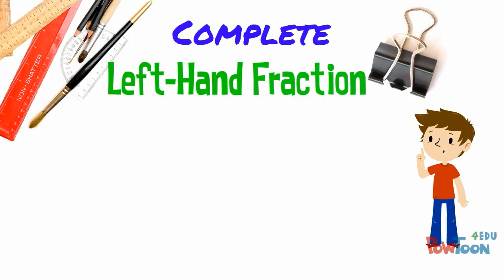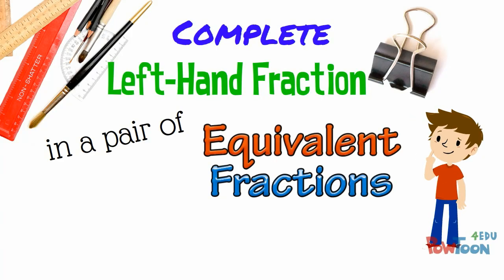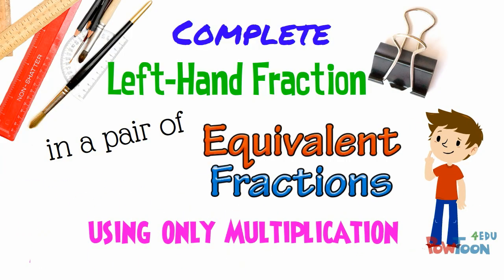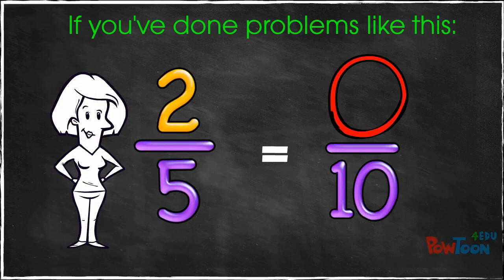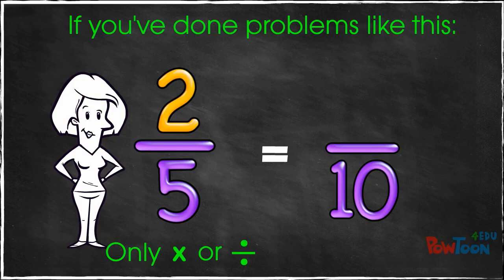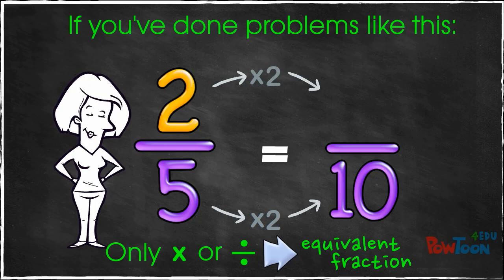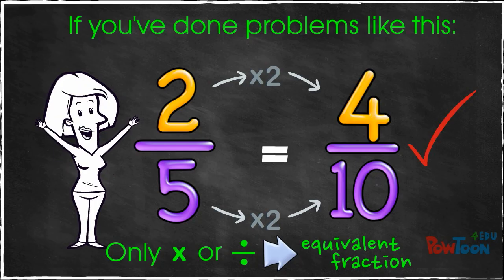Complete the left-hand fraction in a pair of equivalent fractions using only multiplication. If you've done problems like this before where the right-hand fraction needs completing, then you know we can only multiply or divide to make an equivalent fraction. If you get this kind of problem right, then you're ready for the next step.